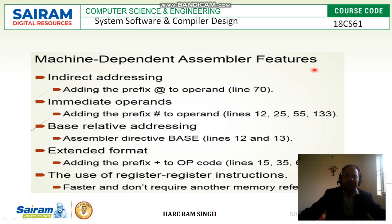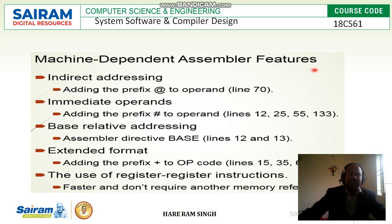Here, machine dependent assembler features. If an operand is prefixed with '@', then it is called indirect addressing. In the program, line number 70, it is given, and we will be seeing that in the coming slides. If the operand is prefixed with '#', then it is called immediate operands. If in the program with any instruction the BASE assembler directive is there, then it is called base-related addressing.